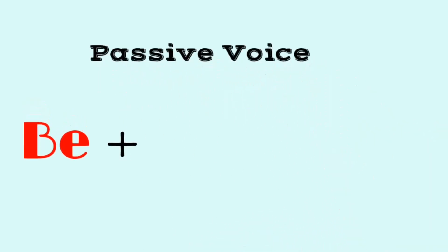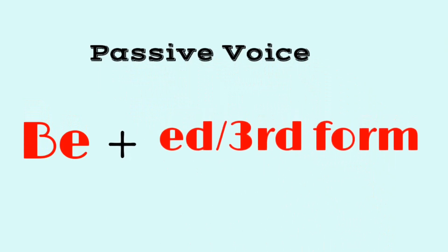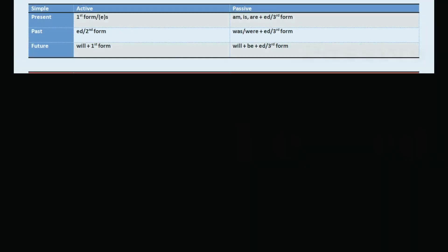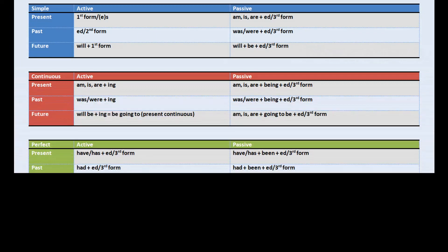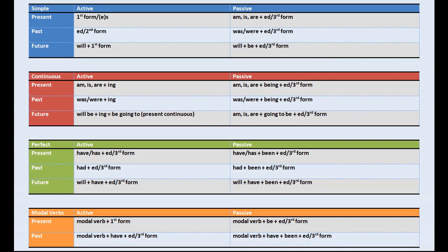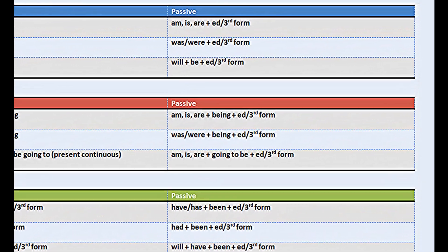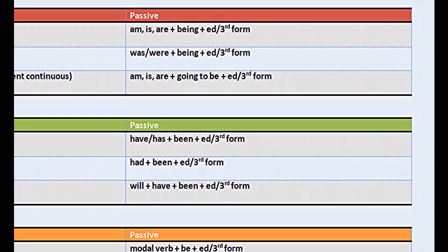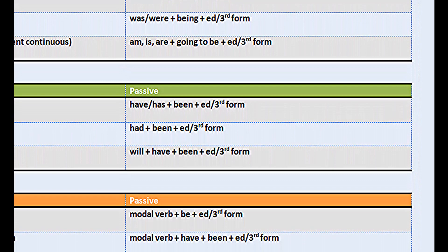The passive voice is formed by the main verb 'be' and a regular verb with ending -ed or an irregular verb in the third form. To understand this grammar topic we need to understand how the active voice is made, and then based on that we form the passive. The verb 'be' will change its forms according to all grammar tenses, while the -ed ending or third form stays untouched.